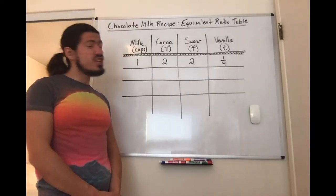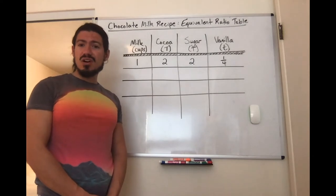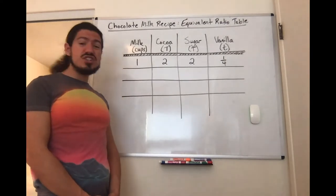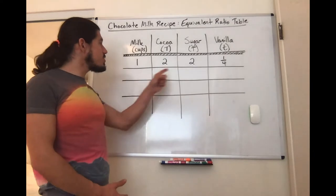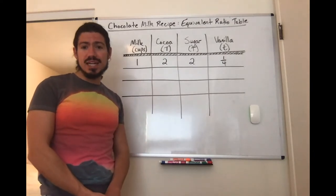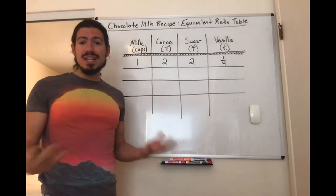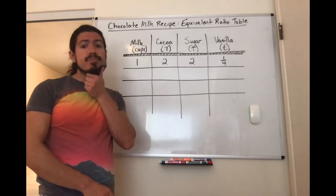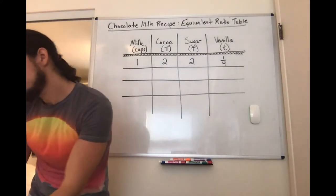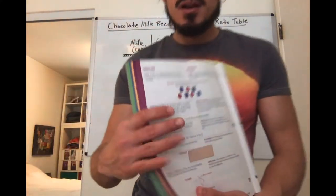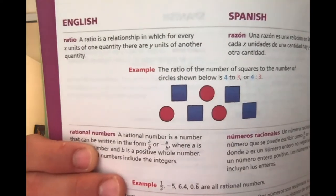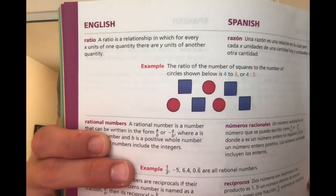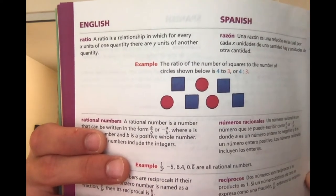I've made an equivalent ratio table to show the recipe for chocolate milk, and I can use it to figure out how much I need for any number of people. Now, do you remember what a ratio is? Let's check the Envision workbook — I love that they have the glossary in here. A ratio is a relationship in which for every x units of one quantity, there are y units of another quantity. They even give an example.